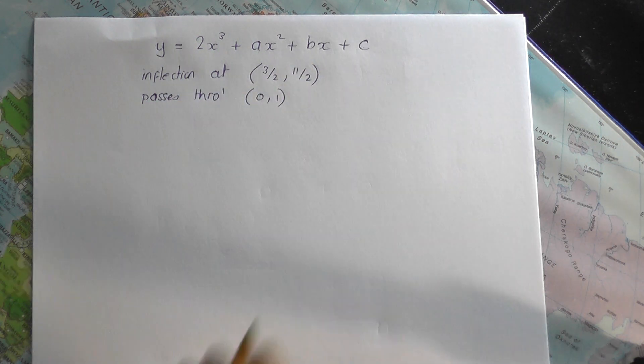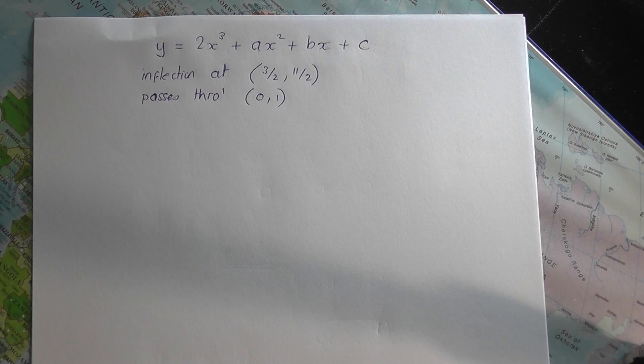So they're giving you all this information. Now, in this question, they're not giving you any information about stationary points. Sometimes they do, sometimes they don't. In this question, no information about stationary points. My job is now to work out a, b and c from this information.